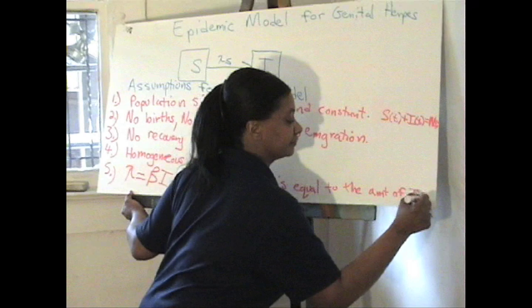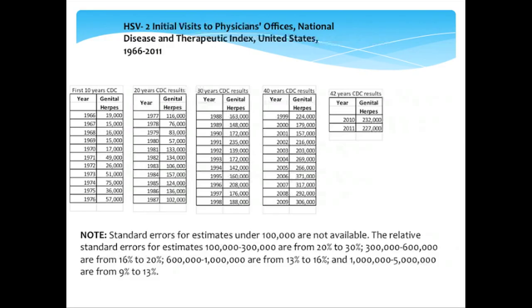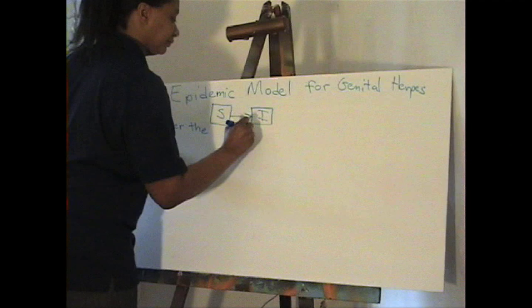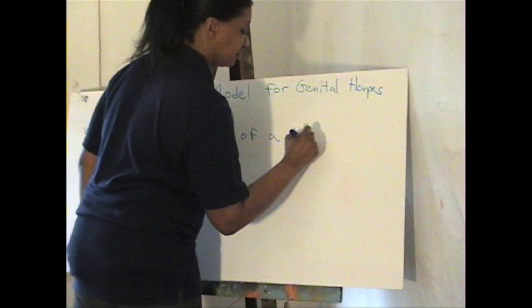Regarding genital herpes: most people normally would not find out they have genital herpes unless they have a visit to the doctor's office. The CDC has studied this disease for the last 46 years, from 1966 to 2011. The relative standard areas for genital herpes estimates of more than 100,000 range from 18% to 30%. We consider the spread of a disease in a population.